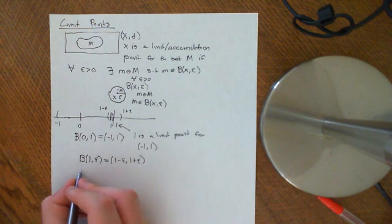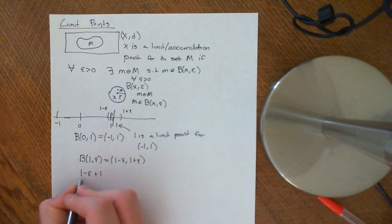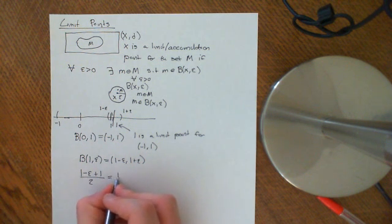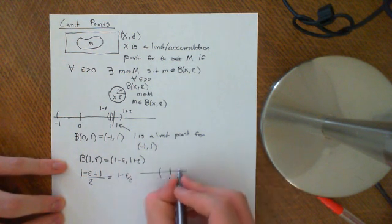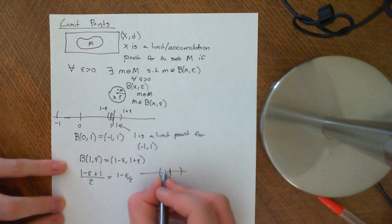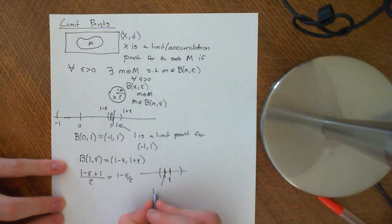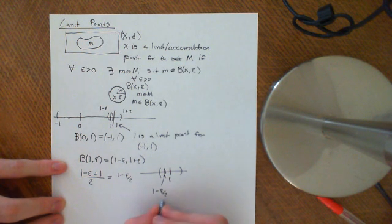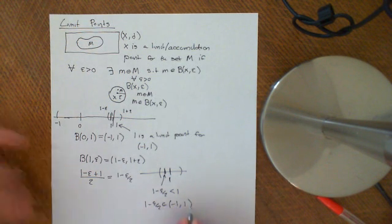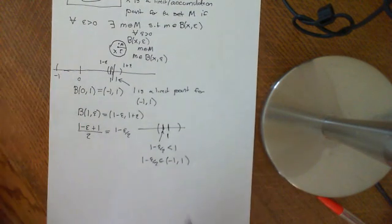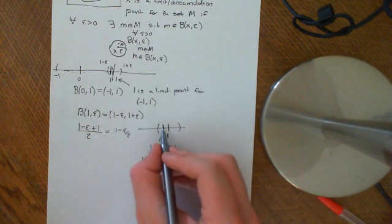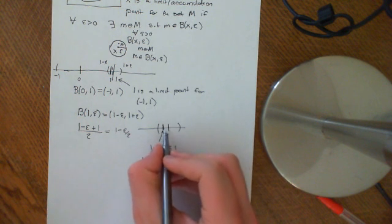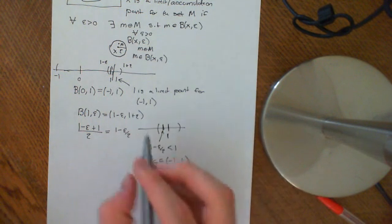So quite simply, just look at the point one minus epsilon plus one divided by two, which gives one minus epsilon over two. Here is the open ball of size epsilon. I've basically taken the midpoint, which is one minus epsilon over two. This number is less than one, and one minus epsilon over two is therefore an element of my original set negative one to one. So whatever epsilon you give me, I can therefore find you a point which is within the epsilon ball of one. So one is therefore a limit point of this set, negative one to one.